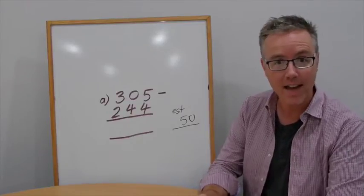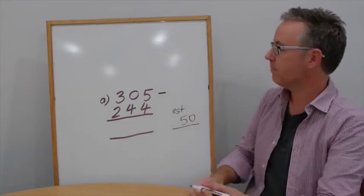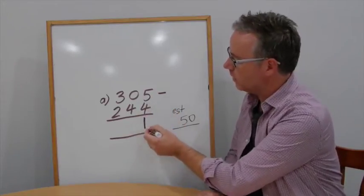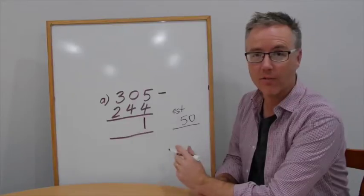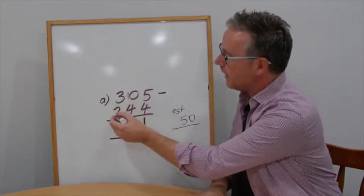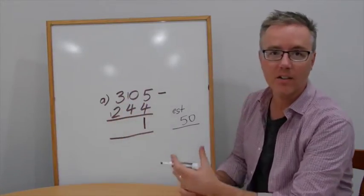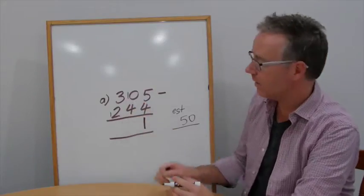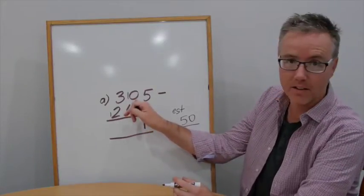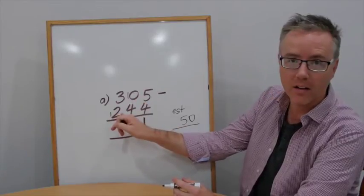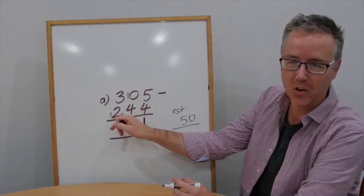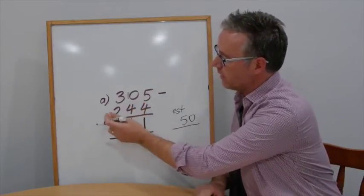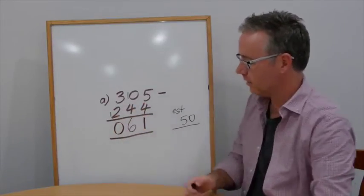Now of course this lesson is add 10, add 10. 5 take away 4, I can do that — 1. 0 take away 4, can't do it. I add 10, and I add 10 to take that off, because of course 10 tens is 100. 10 tens in the tens column is the same as 1 in the hundreds column. 10 take away 4 is 6. 3 take away 3 is 0. And it's close to the estimate.